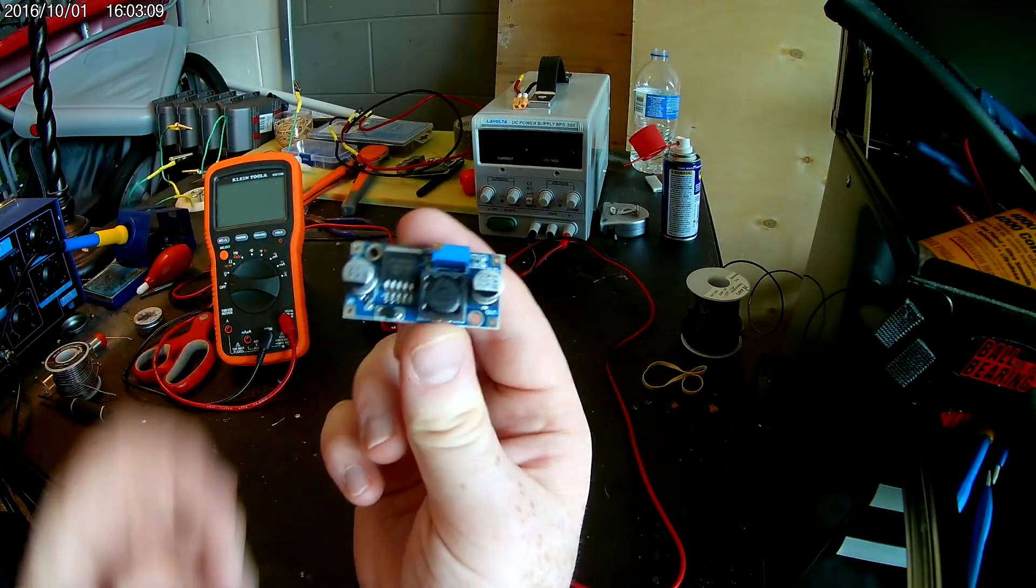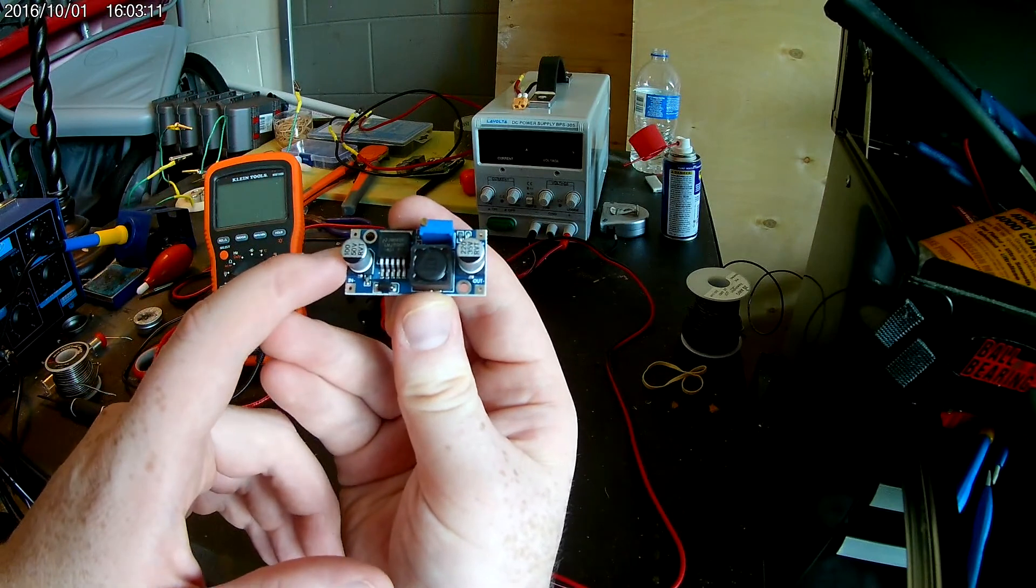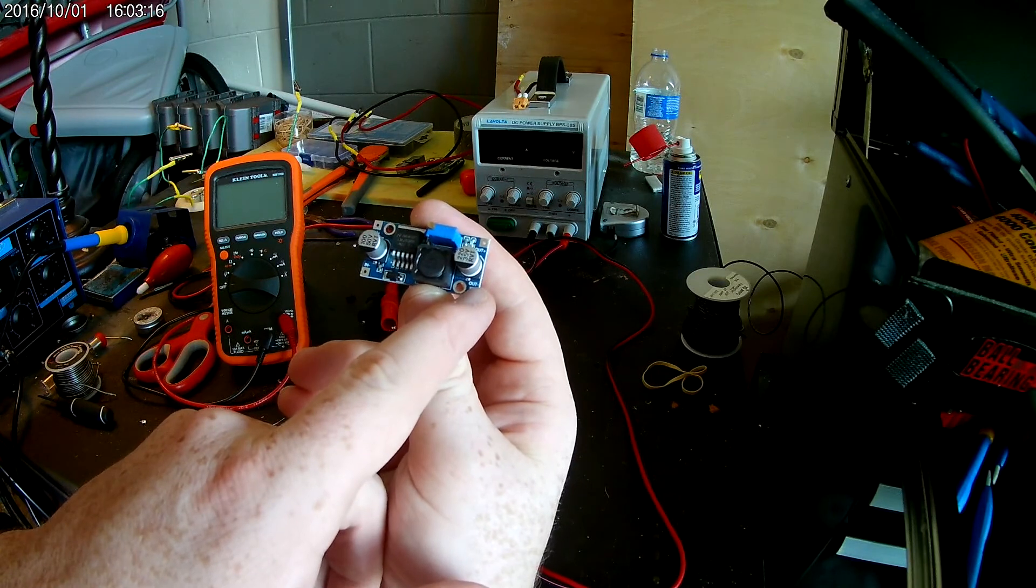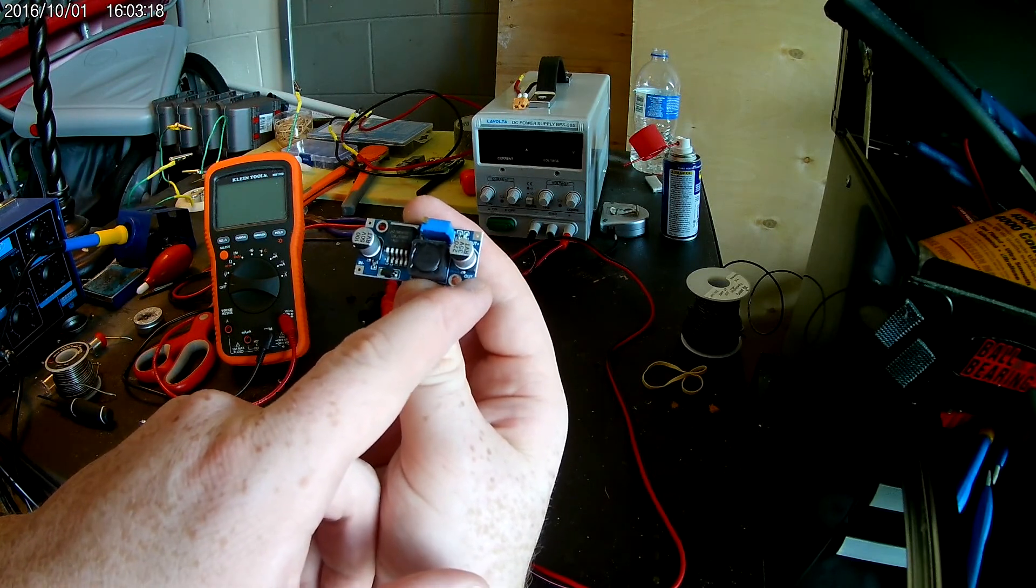So here's the chip. It says in, and then it says out. Right here is where you would adjust how much volts you want out.